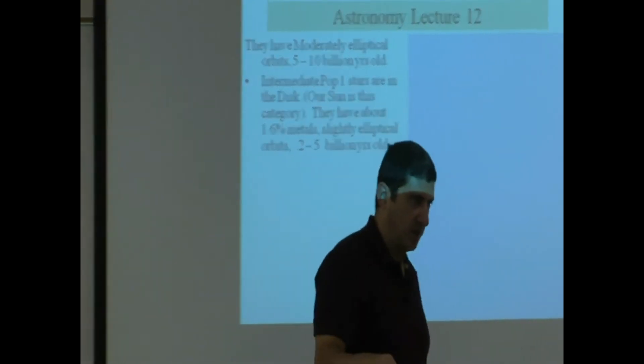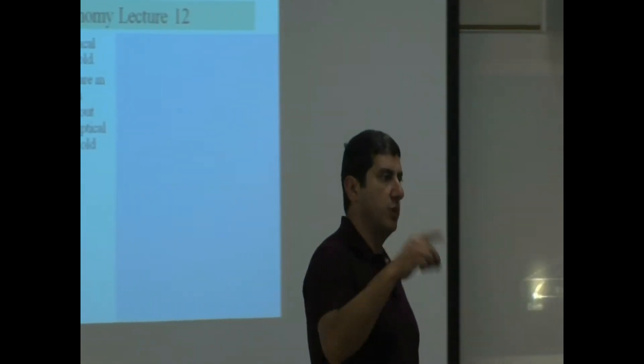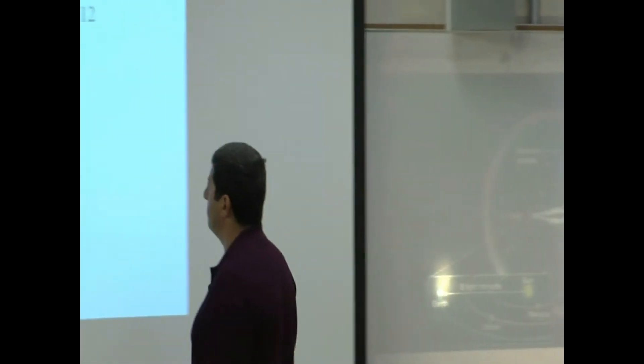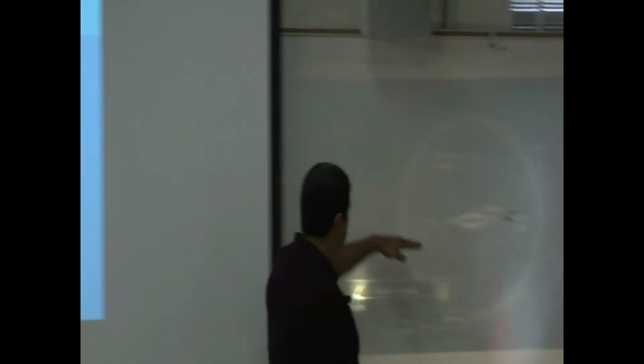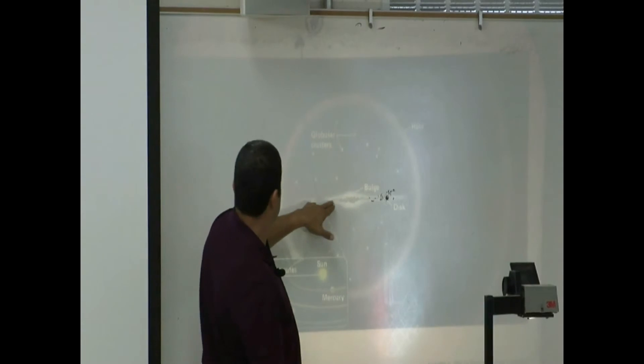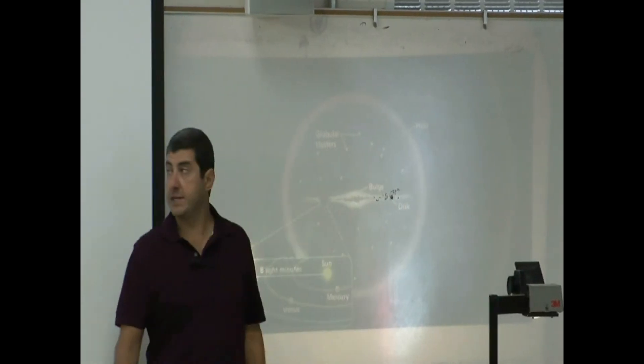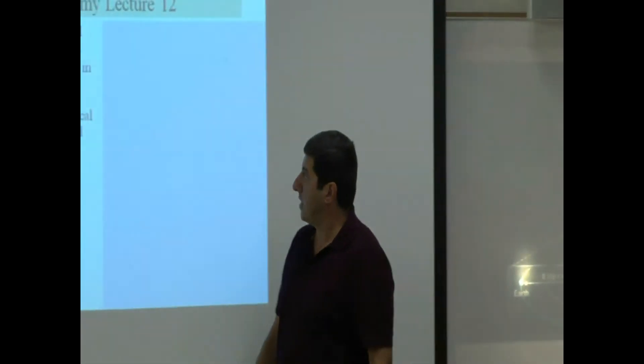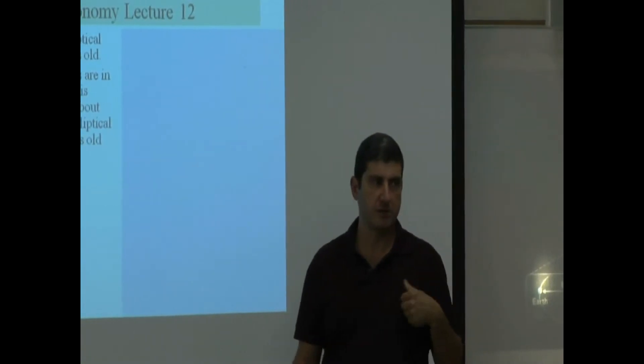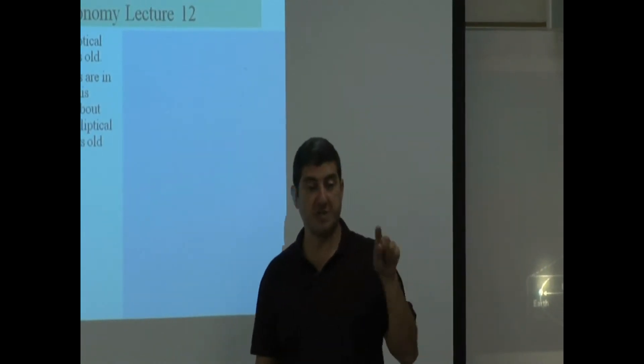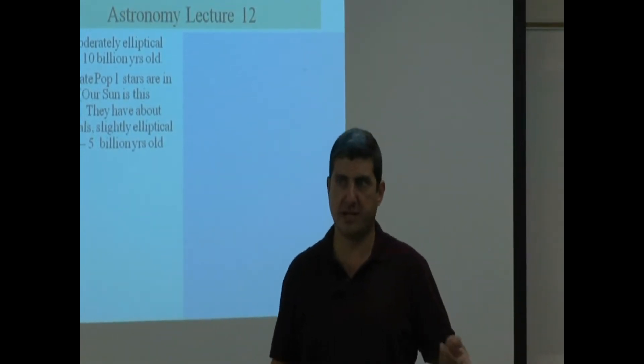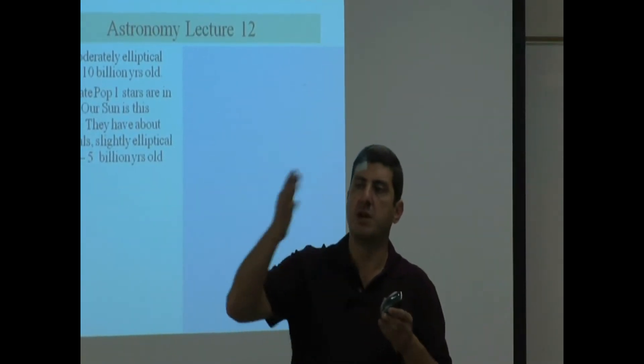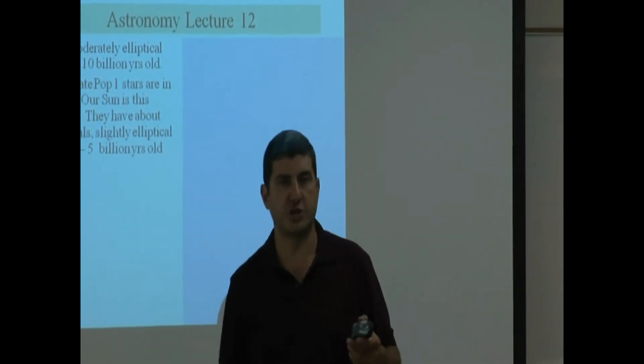Okay, now we go to the Pop 1 stars, the younger ones. We break those guys up into a category. Intermediate Pop 1 are in the disc, so those would be these guys here, the disc. And then our sun would be this category. So now you shouldn't be surprised that the sun has an Earth-like planet around it. It has Earth because our sun formed, it's like a third generation star.